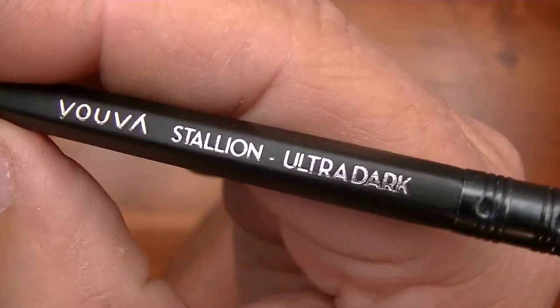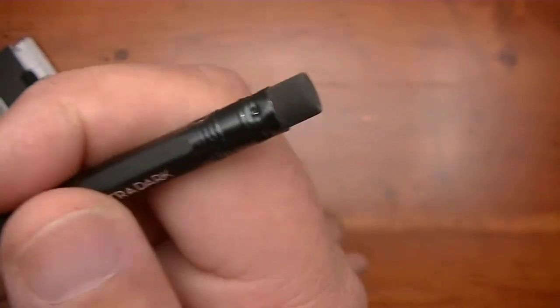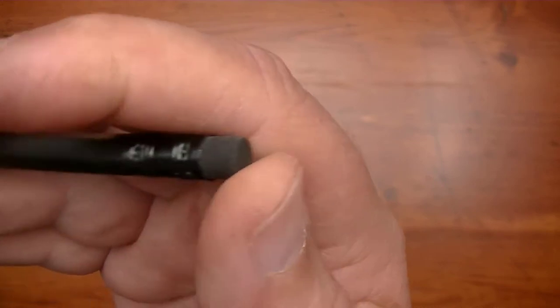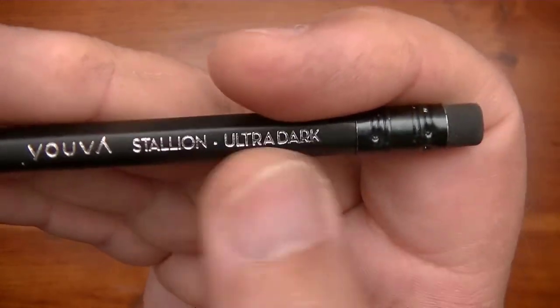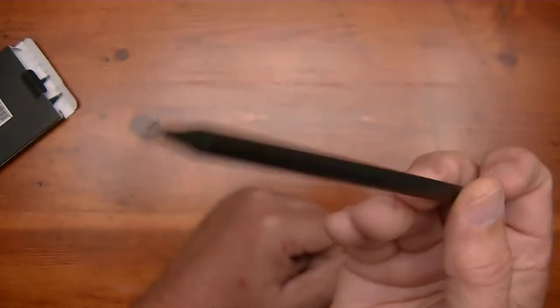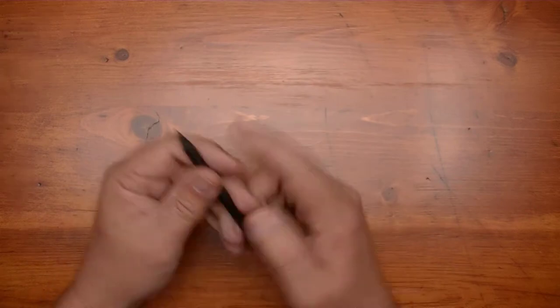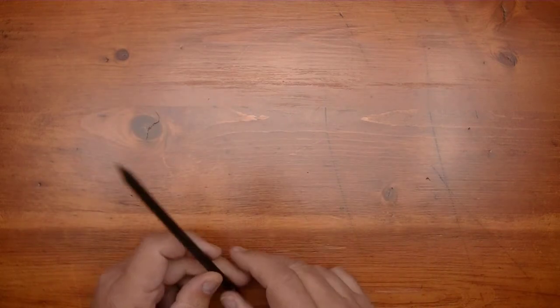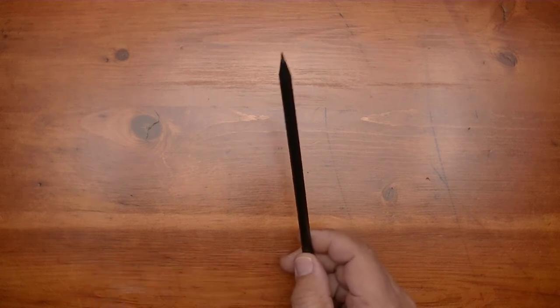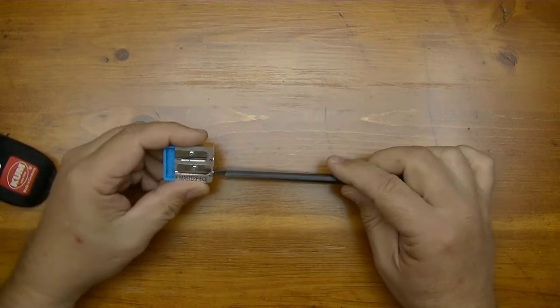You have this silver lettering called the Yuva Stallion Ultra Dark. It has a black ferrule and a black eraser, so it's an all black pencil. We're going to see if the ultra dark also refers to the tonal quality of the lead. They come pre-sharpened but I like to get a point on my pencil, so I'll sharpen this with this cube here.